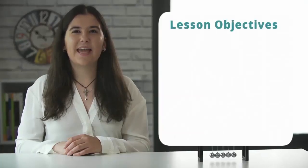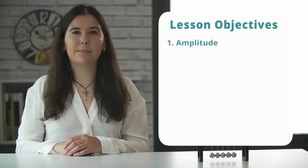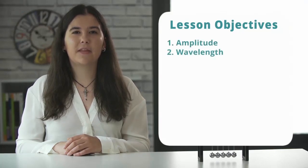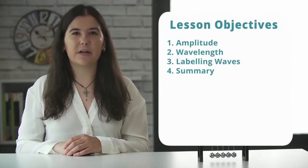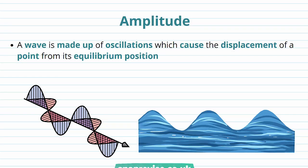In this video we're going to be looking at amplitude, wavelength, labelling waves, and we're going to finish with a summary. We're going to start off by talking about something called wave amplitude, and we want to understand what the amplitude of a wave is and how we can find it.